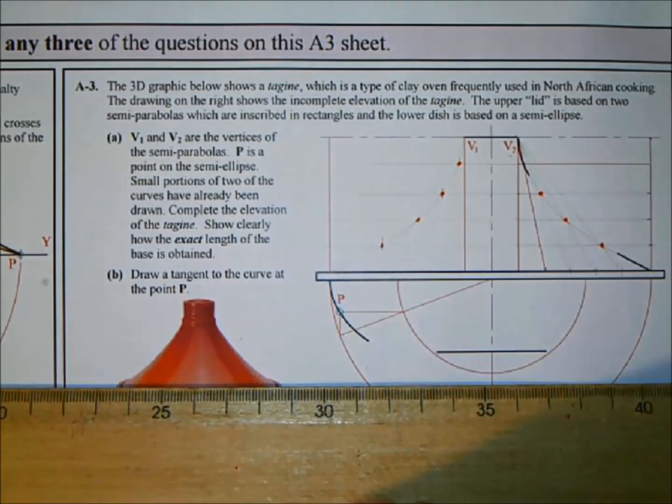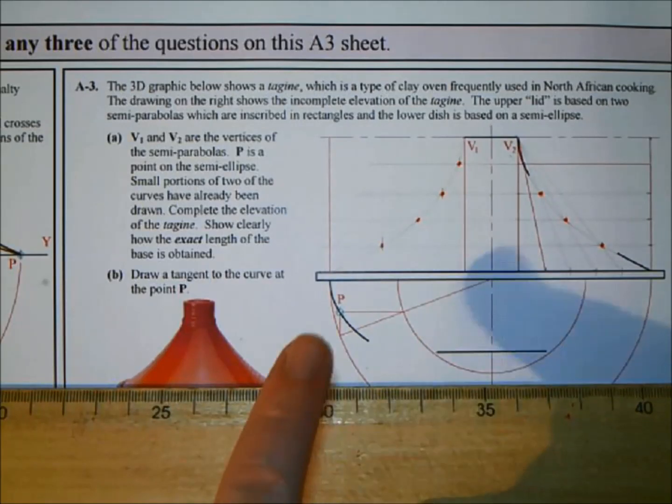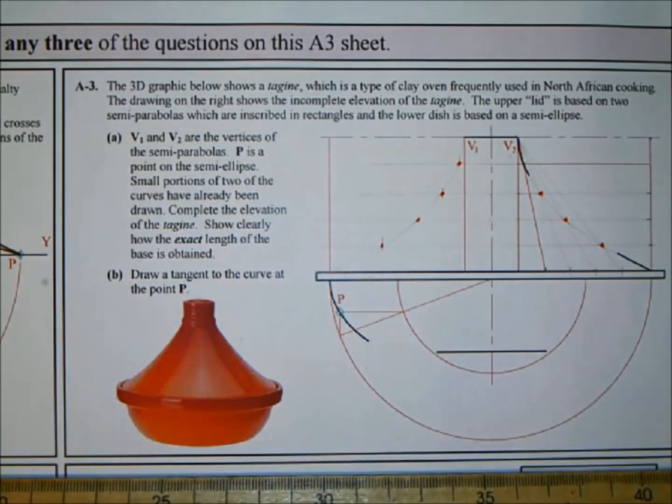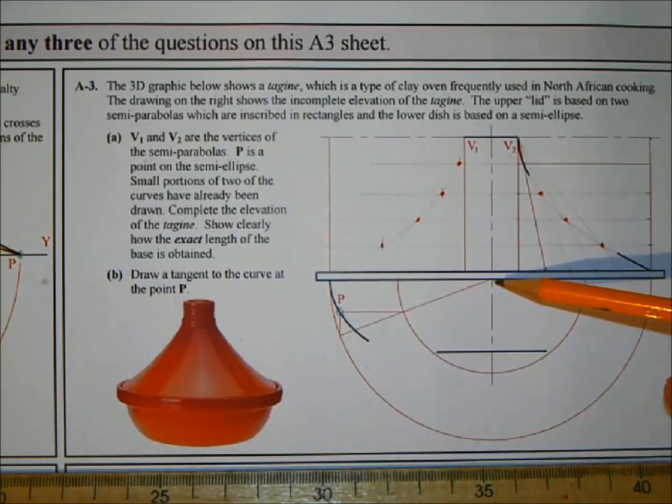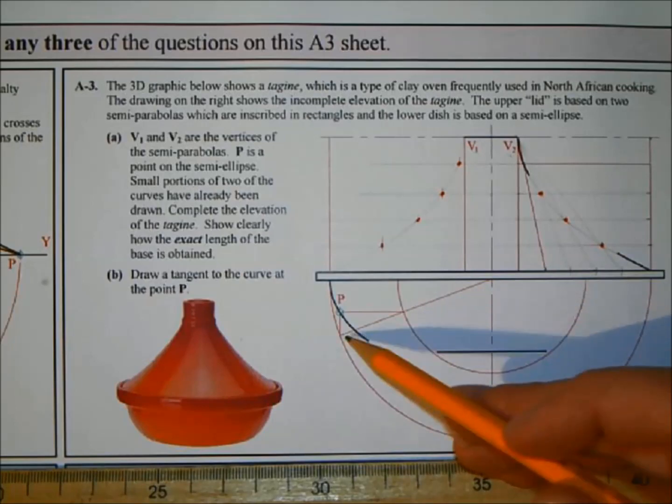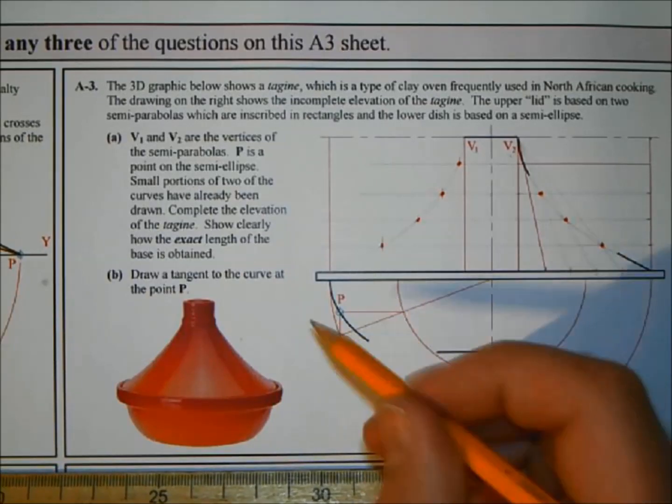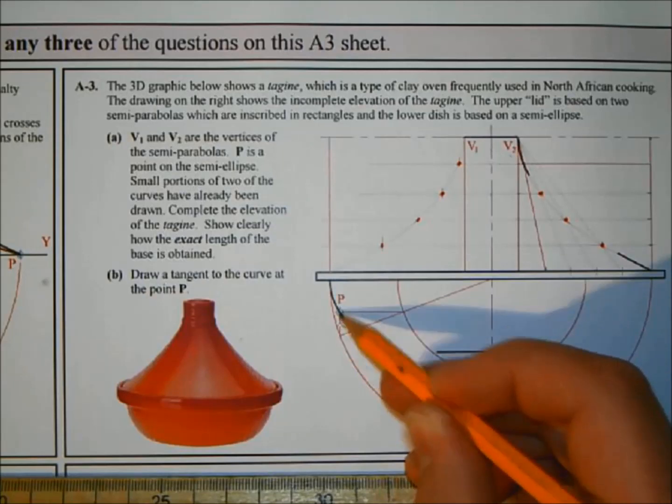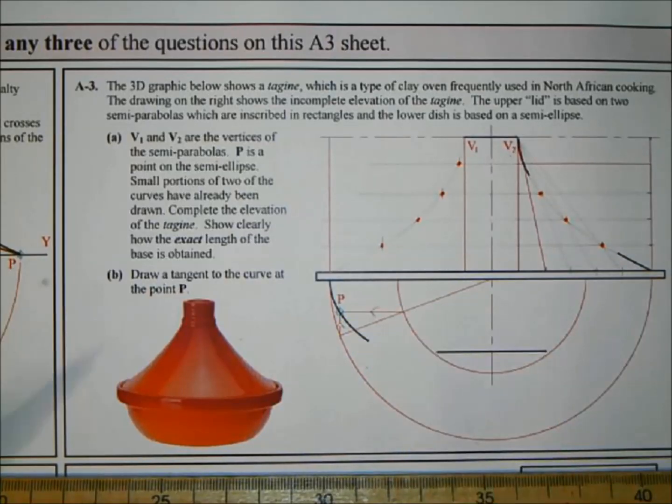P1, P2 are the vertices of the semi-parabolas. P is the point on the semi-ellipse. Small portions of the two curves have already been drawn. Complete the elevation showing clearly how the exact length of the base is obtained. So let's work now on the bottom section. Based on the ellipse, you need a minor circle and a major circle using the concentric circles method. They've divided up 30, 60 degrees. Where the 30-degree line hit the major circle, that was drawn straight down. Where it hit the minor circle, this one goes up, this one goes across, and where they meet gives you a point on the ellipse. Repeat the process to find the rest of the ellipse.